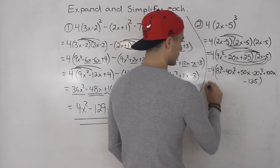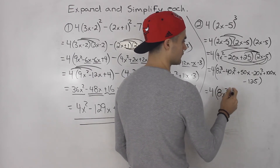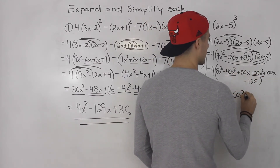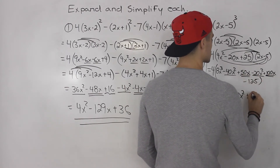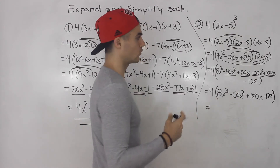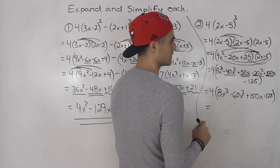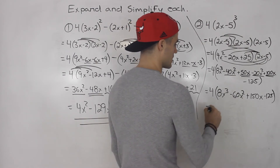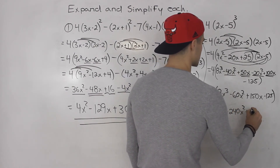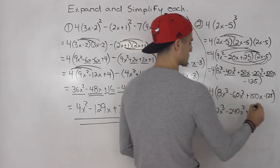This is all in brackets. Before distributing the 4, I would first simplify: 8x cubed stays by itself; minus 40x squared minus 20x squared gives minus 60x squared; 50x plus 100x gives 150x; and minus 125 stays. Then distributing the 4: 32x cubed, minus 240x squared, plus 600x, minus 500. That is your final answer.